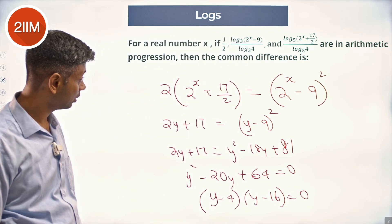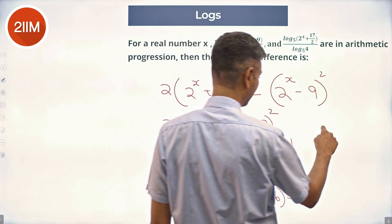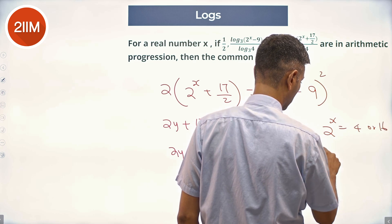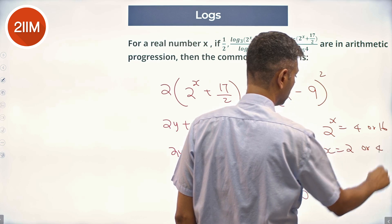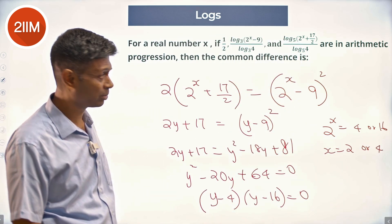So 2^x is y. So 2^x equals 4 or 16, or x could be 2 or 4 - not plus or minus, either 2 or 4, no plus or minus.